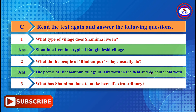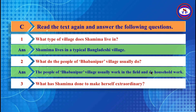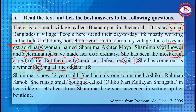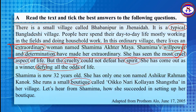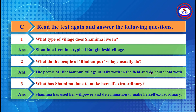What has Shamima done to make herself extraordinary? Look at the specific part of the passage to answer this question. Your answer will be: Shamima has used her willpower and determination to make herself extraordinary.